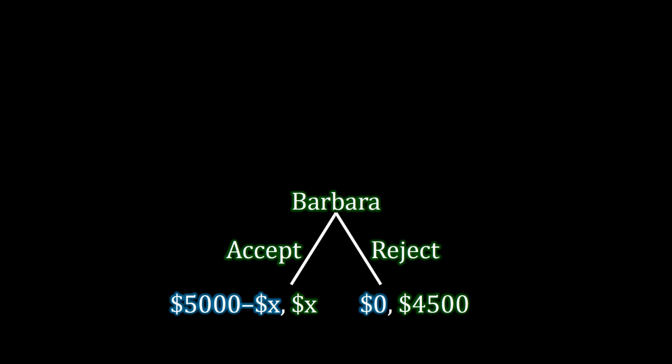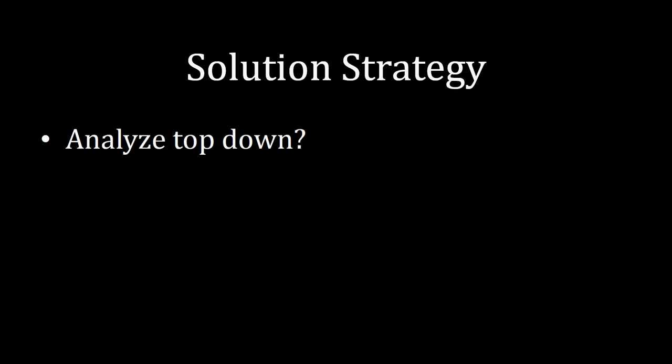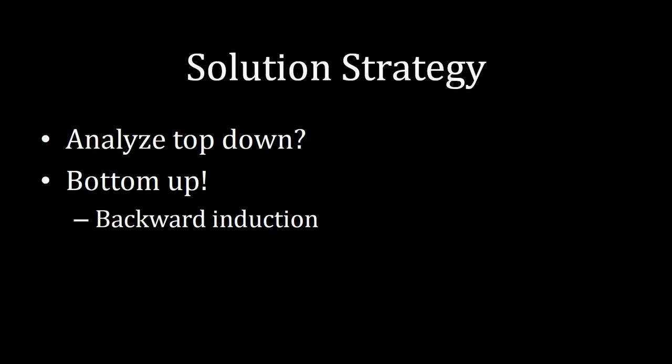Now that we understand the flow of this game and the payoffs, we can figure out how to solve it. There are usually two different ways people go about doing this, one of which is much better. The temptation is to analyze the game top-down, since that's how it will eventually be played — Albert makes an offer, then Barbara accepts or rejects. However, this really is not a good way to think strategically. The better approach is backward induction: working from the bottom up.